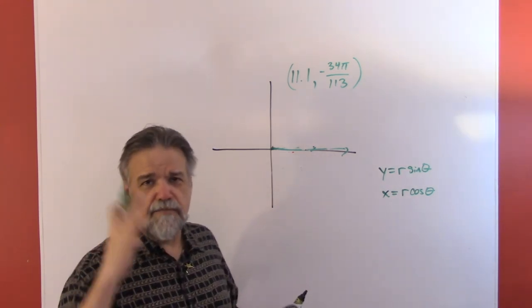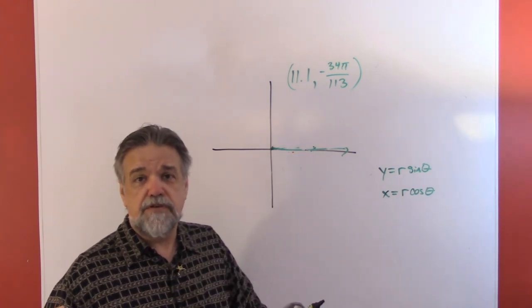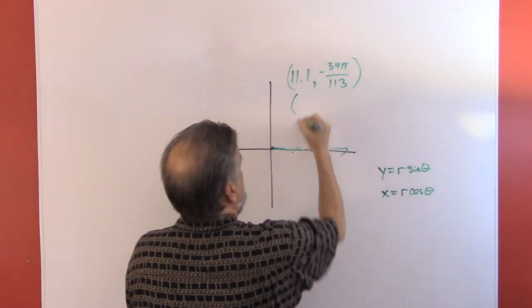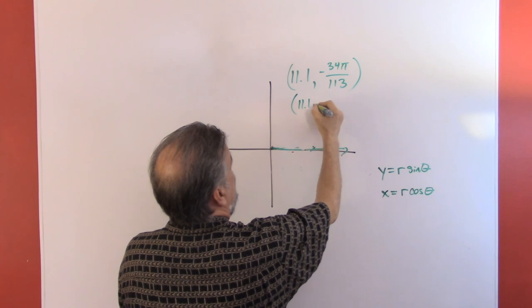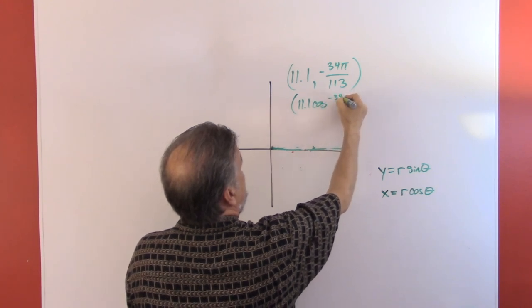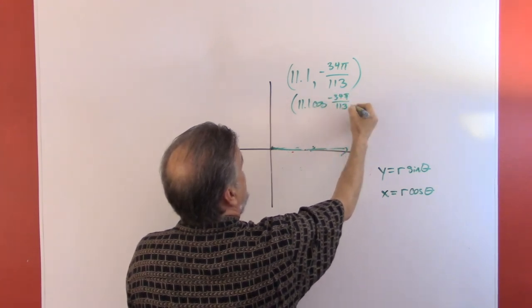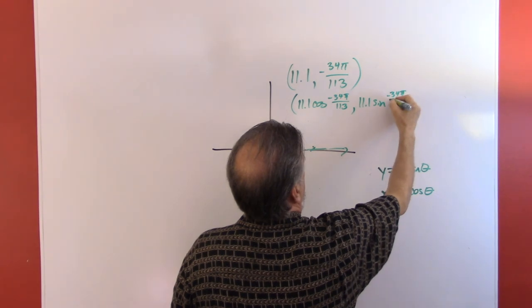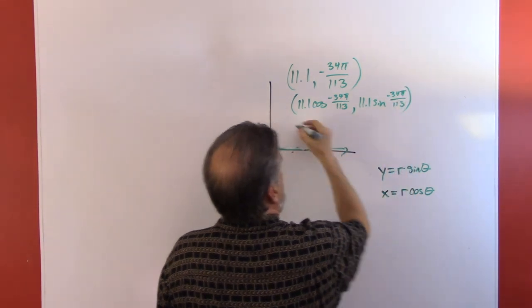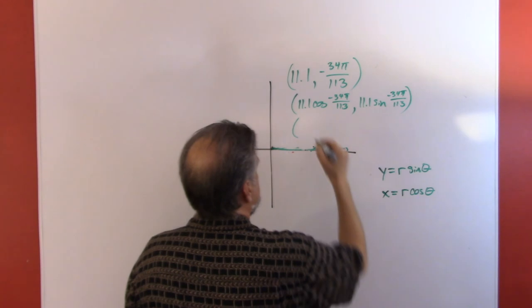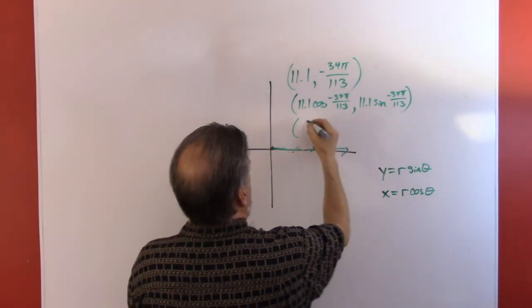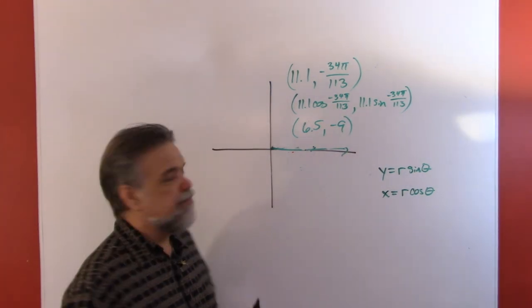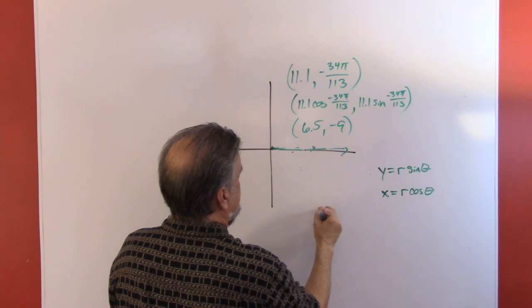You don't have to plot the point if you don't want to, you can just go straight from here to—matter of fact, let's go ahead and do that. We're just going to say x is 11.1 times the cosine of -34π/113, and y is 11.1 times the sine of -34π/113. Once we pop that in our calculators, we'll see that this is approximately 6.5 and -9. So if I were to plot that, I would go 6.5, -9, down here.